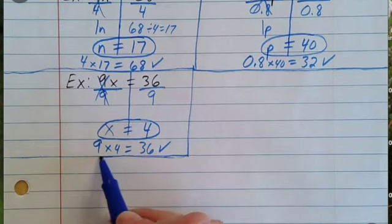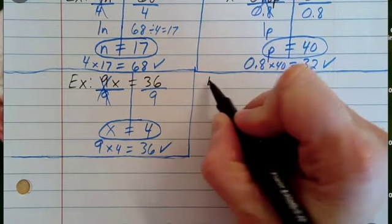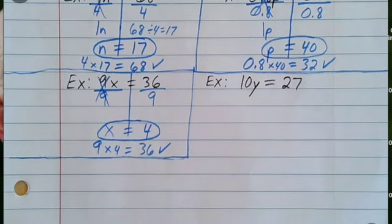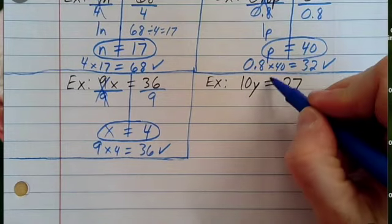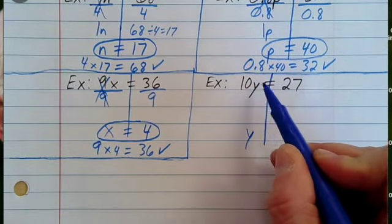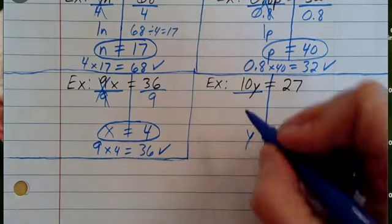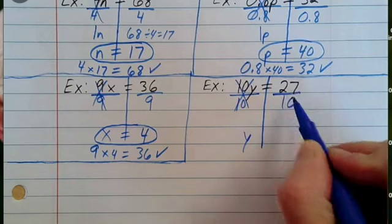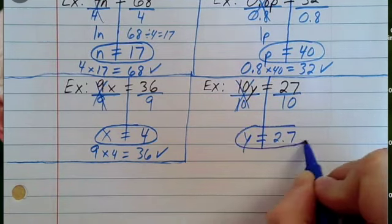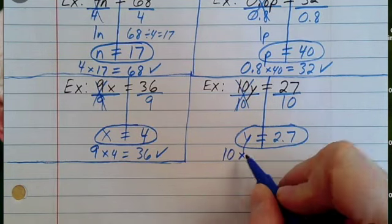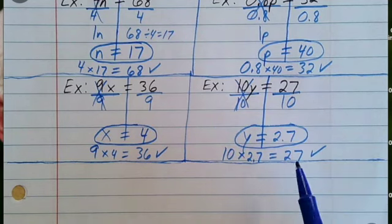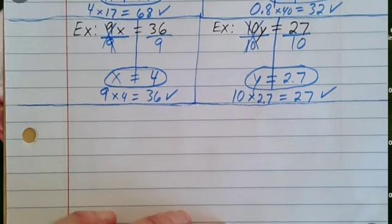Here's another problem: 10y equals 27. So 10 times y equals 27 — what is y going to equal? Draw a line down the equal sign and get y by itself by dividing by 10. 10 divided by 10 is 1, giving me y. Divide by 10 on both sides: y equals 2.7. Does 10 times 2.7 equal 27? Yes, it does — you can check that on the calculator. Those examples all showed multiplication solved by dividing — the inverse operation.